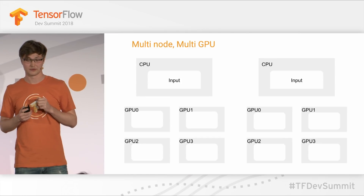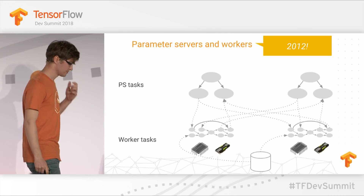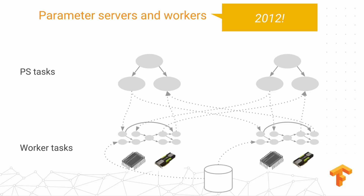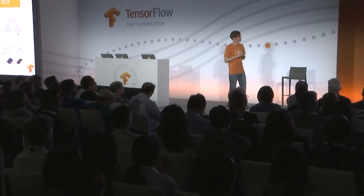There is a solution to this — it's called the parameter server approach. Some hosts, called parameter servers, will only hold training weights. Other hosts, called workers, will have a copy of the TensorFlow graph. They get their own input, compute their own gradients, and then update the training weights without any coordination with other workers. This is a low-coordination approach that scales well, and we've been doing this at Google for a long time.